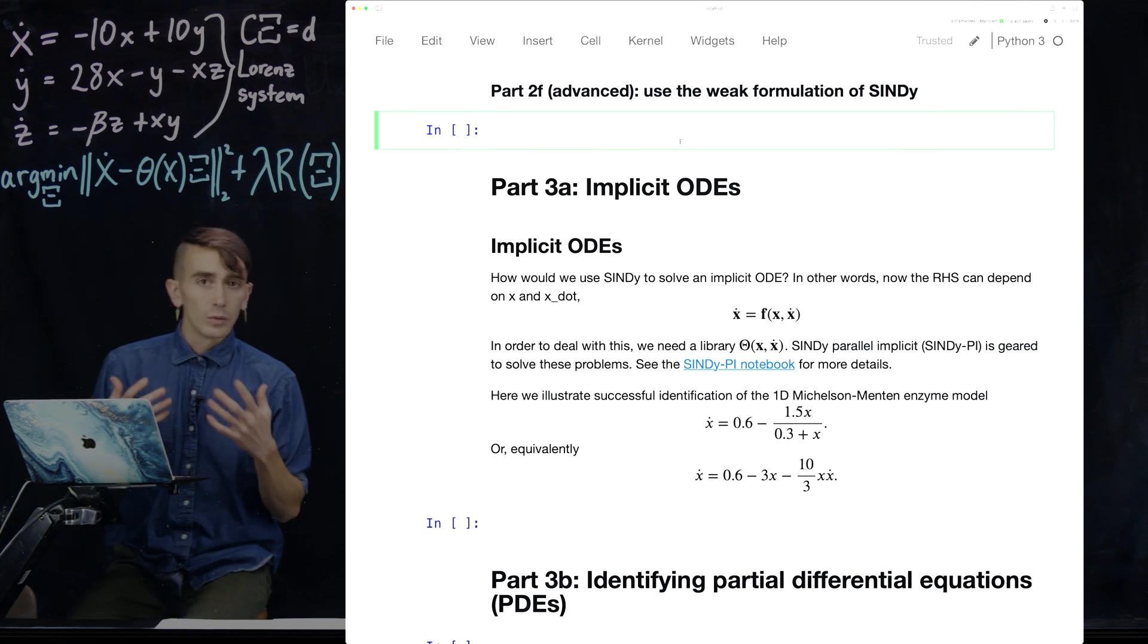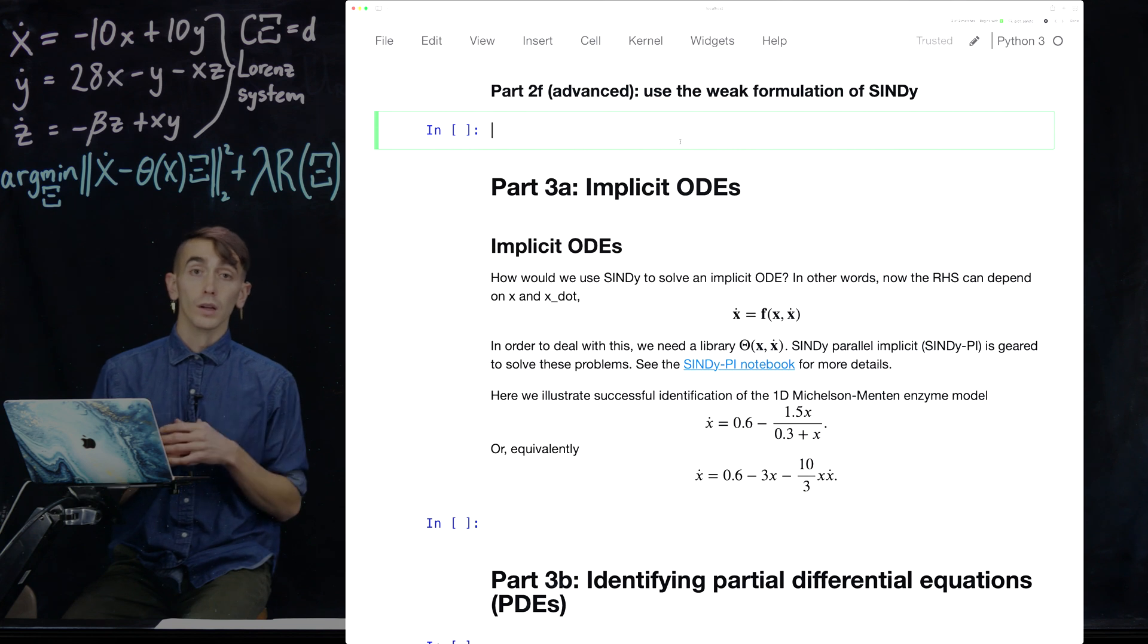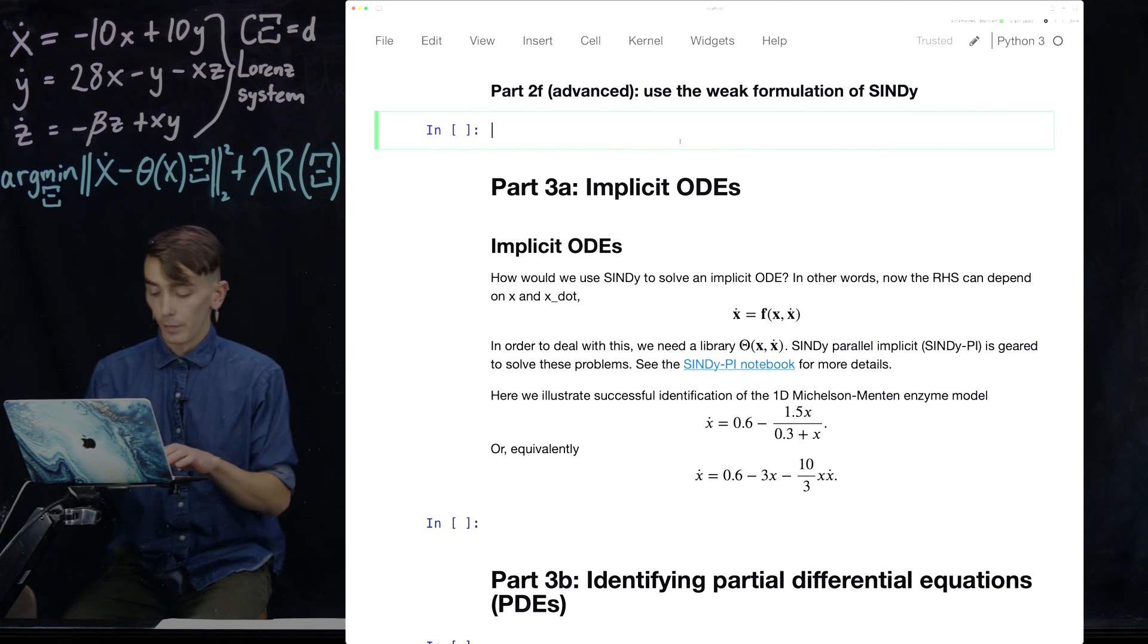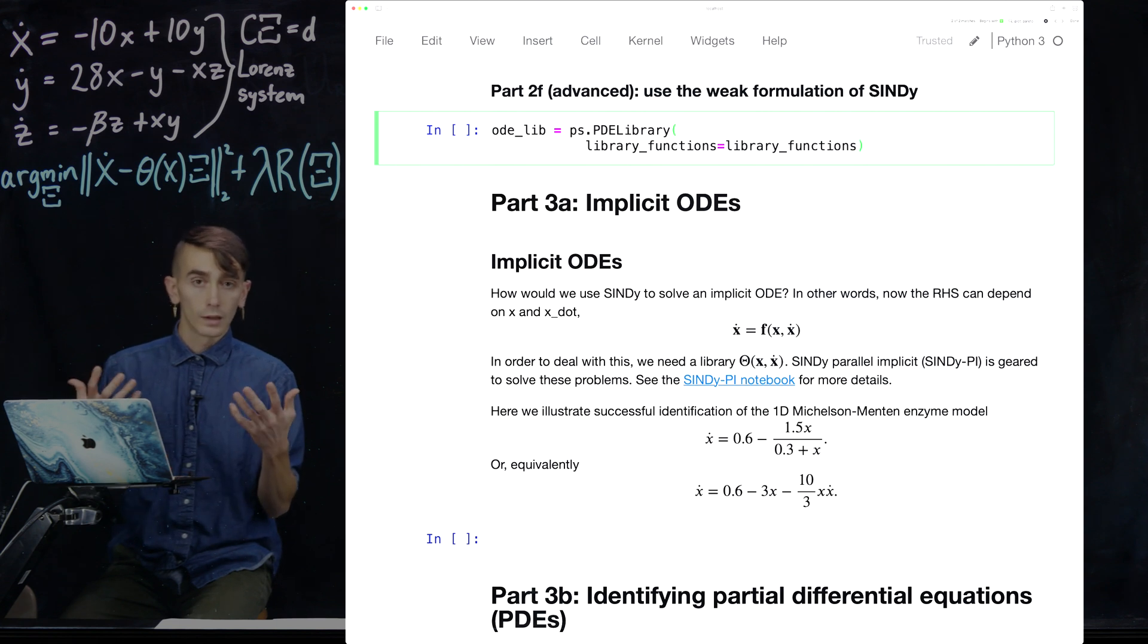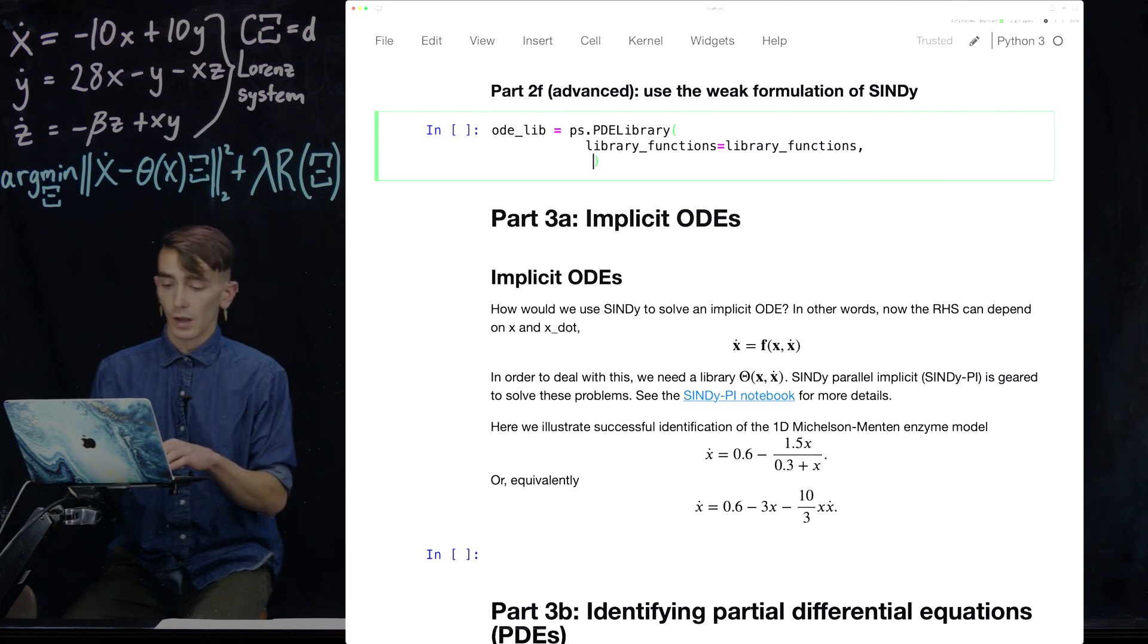I'm not gonna explain what the weak formulation is here. I encourage you to read papers from Reinbold and Messenger and elsewhere about what this is, but I'll just show you how it can be used and how much of a benefit it can give you on robust data. So, we're going to define a new library. PySINDY library. And we're gonna use the same library functions as before, a quadratic polynomial custom library. And the reason it has to be custom is just because we're using this special PDE library, but this is not so important.